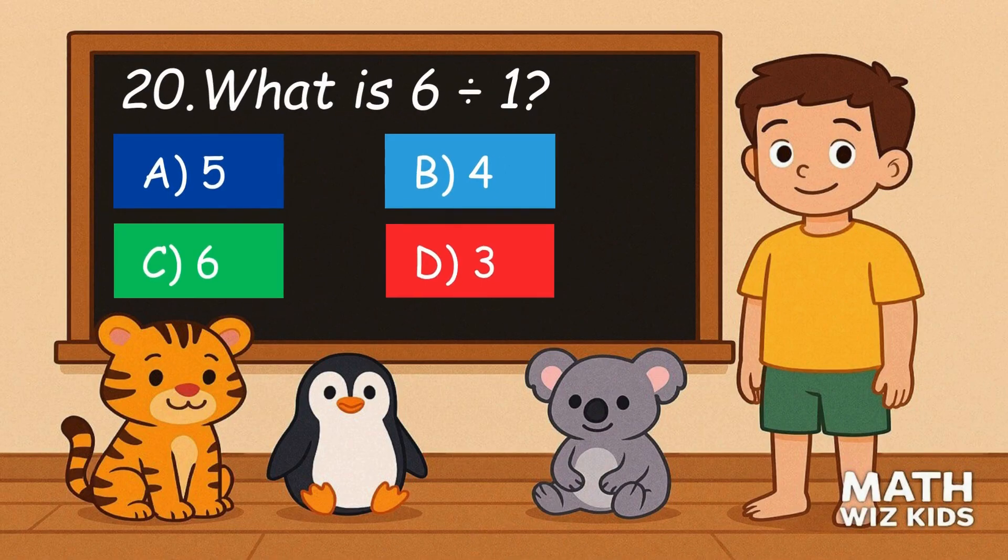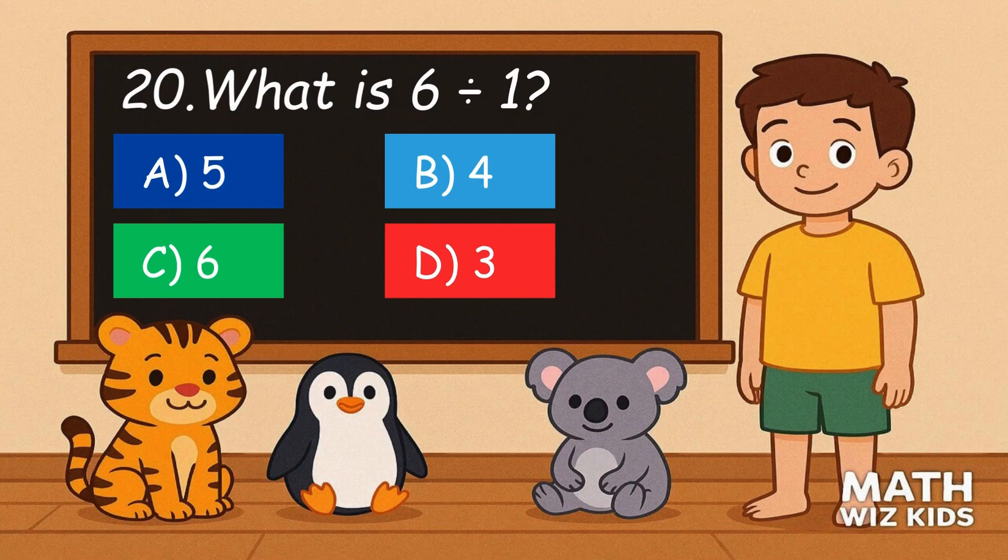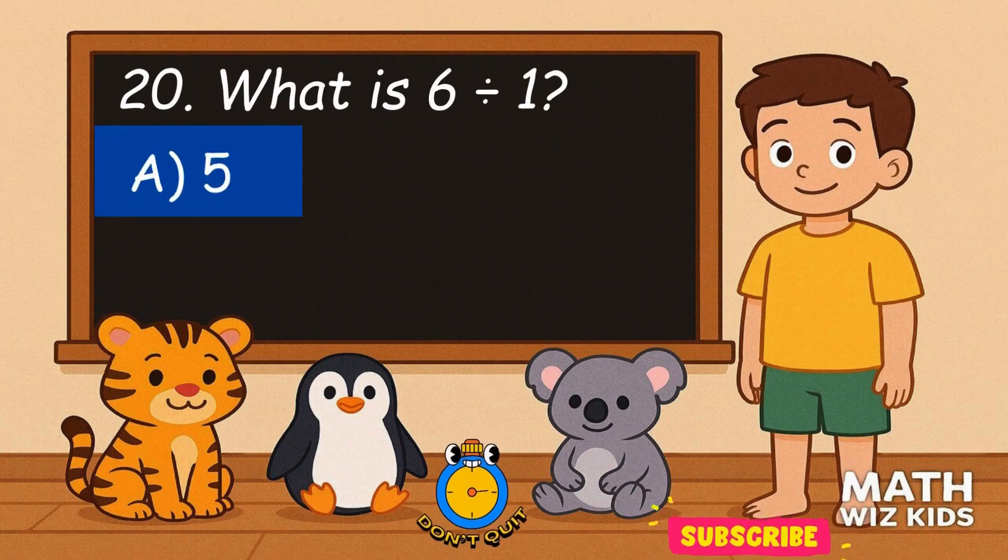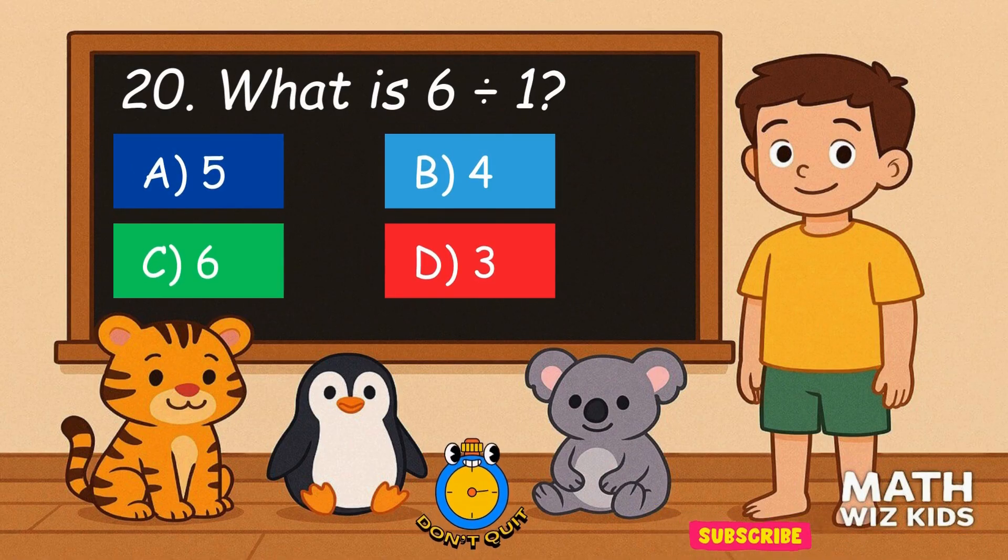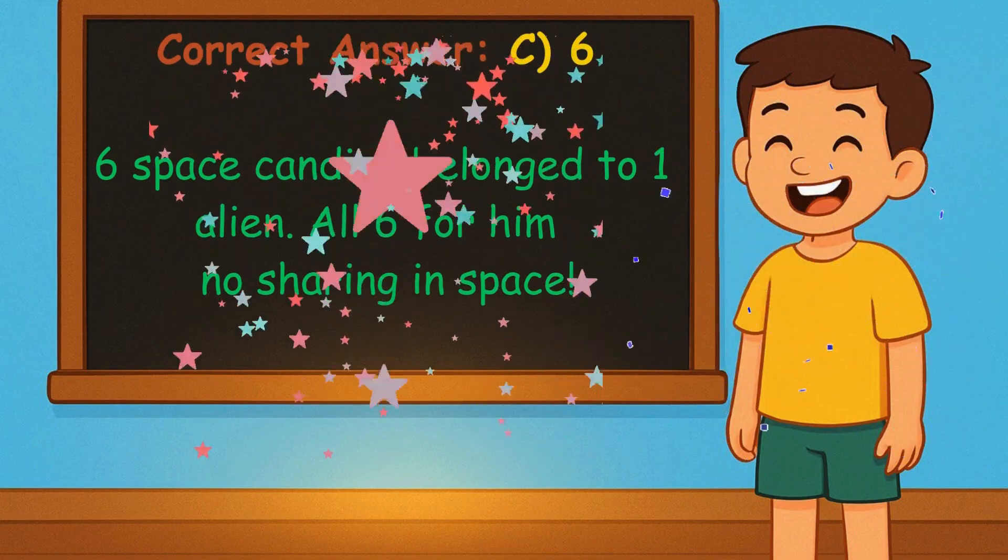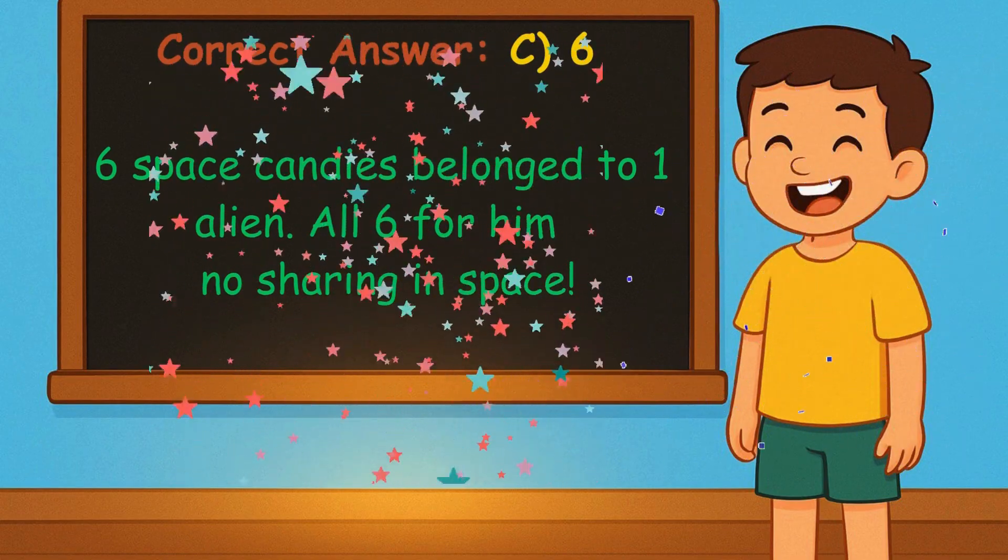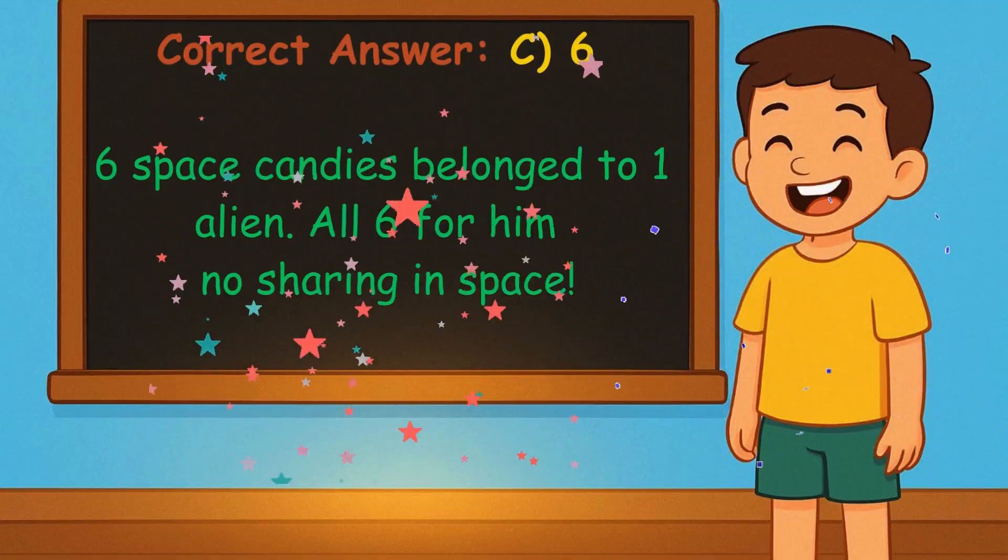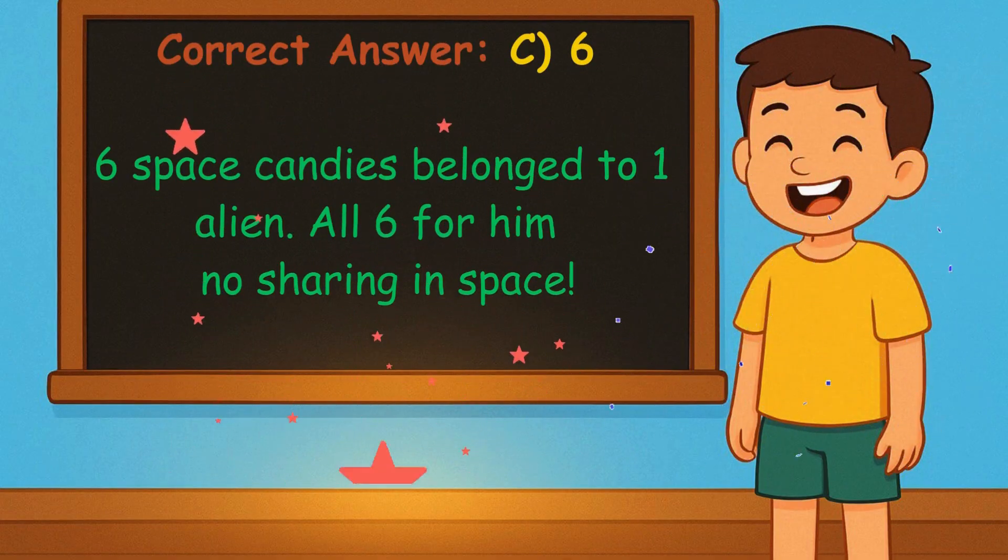20. What is 6 divided by 1? Is it A, 5, B, 4, C, 6, or D, 3? Correct answer is 6. 6 space candies belong to 1 alien. All 6 for him. No sharing in space.